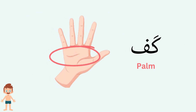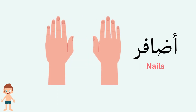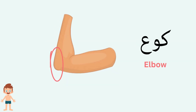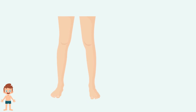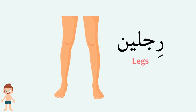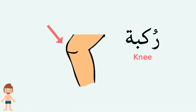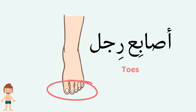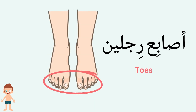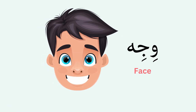كف (palm), أظافر (nails), كوع (elbow), رجل (leg), ركبة (knee), قدم (foot), أصابع رجل (toes).